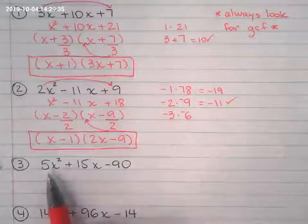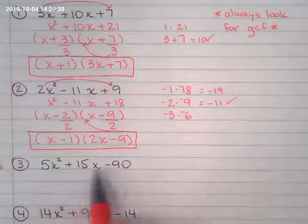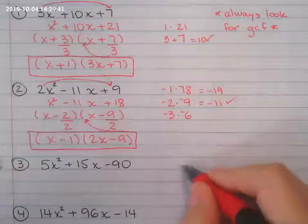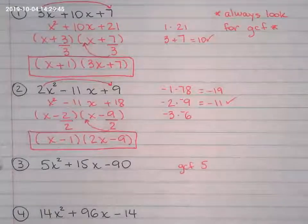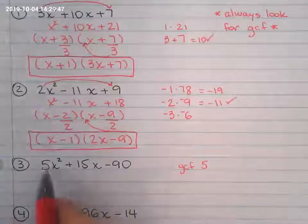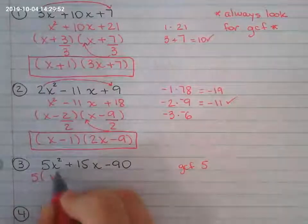All right. I can clearly see that number 3, I can divide everything by 5. So my GCF right here is 5. When my GCF is 5, I can divide everybody by 5. So my GCF goes outside, and I divide everything by 5.